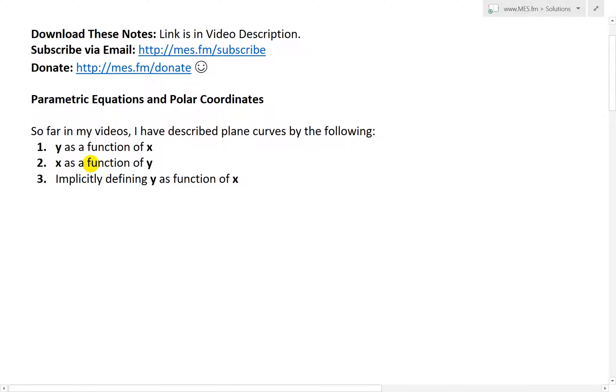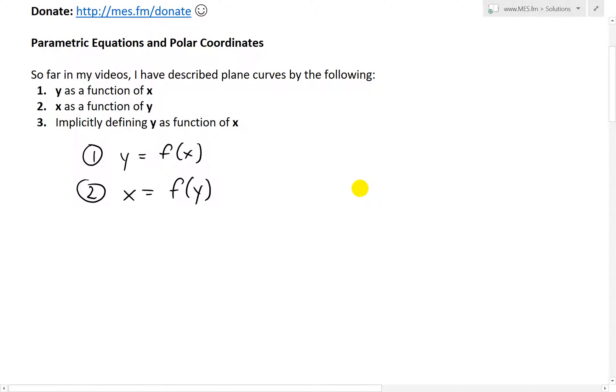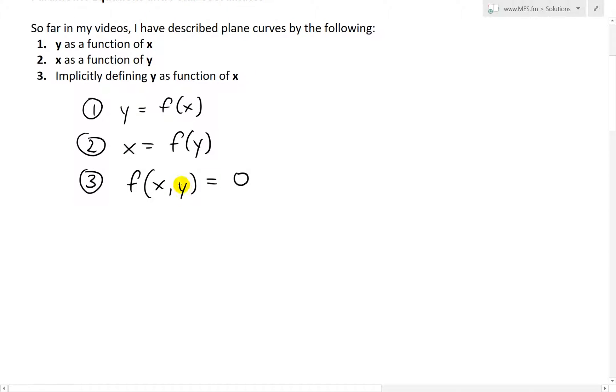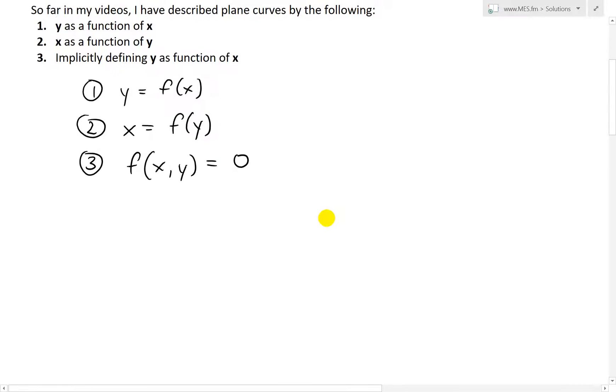Number one is y as a function of x, so in other words y = f(x). Number two, x as a function of y, defining x = f(y). And number three is implicitly defining y as a function of x, but not explicitly stating it as number one. So in other words, you have a function f(x,y) and let's say we set this equal to zero for example. Then we define y as a function of x implicitly, but not given right away that it's a function of x, and then you can still graph these.